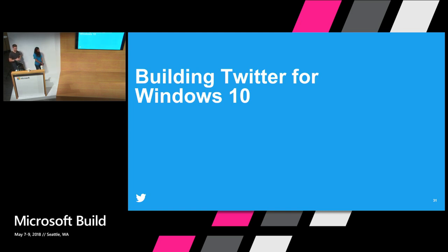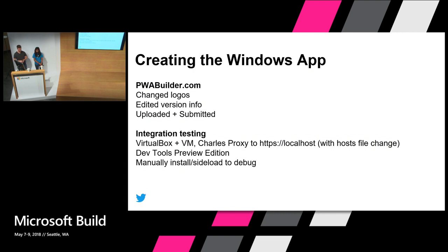After adding those features, we were pretty confident we had a solid widescreen experience — a good starting point to work with bigger screens and mice. Now I want to talk specifically about how we brought the app to Windows 10 and the Microsoft Store. To bootstrap everything, we used PWABuilder.com, downloaded the build it gives you, and it's basically ready to upload at that point. We swapped out a few logos for branding and changed some version info. Also worth noting — we all use Macs at Twitter, so I used Virtual Box with one of the Microsoft-provided VMs to iterate quickly and test things.